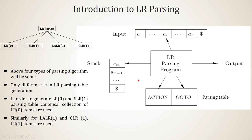In LR parsing we have a stack, an output that will be the parse tree, and an input string whose end is marked by $. We also have a parsing table, which has two divisions: action and go to. This will become clear while we study the construction of the parsing table.